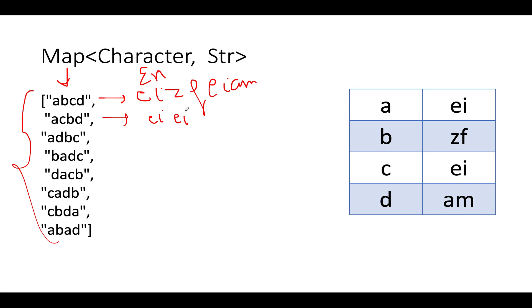So A is again E I, then we have C as E I, then B as Z F, then D as AM. Next we have ADBC, so A points to E I, then D as AM, then B as Z F, then C as E I.